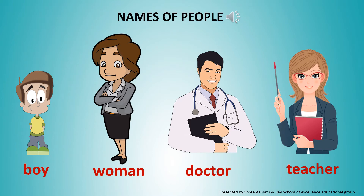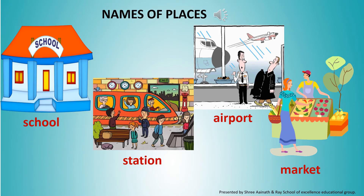Boy, woman, doctor, teacher — these are names of people. School, station, airport, market — all these are names of places.